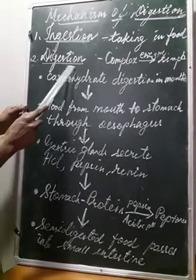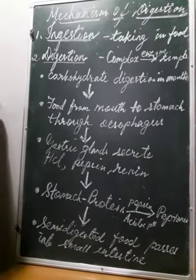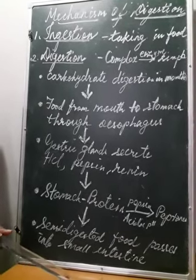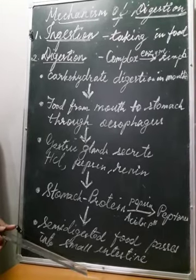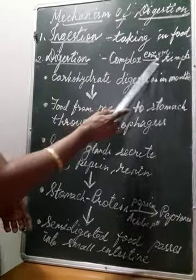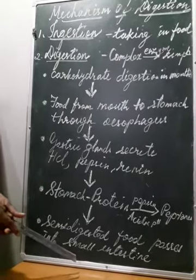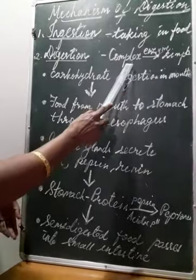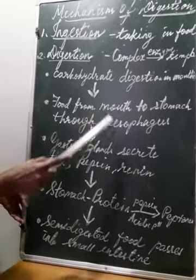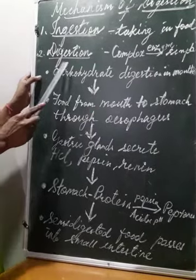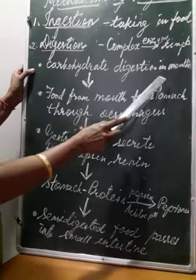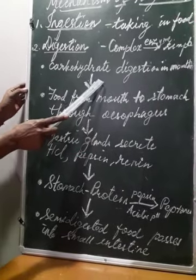The next process is digestion. What is digestion? It is a process where complex molecules are converted into simpler form by the biological catalyst known as enzymes. So complex food is converted into simple form by enzymes. The first step in digestion: carbohydrates are digested in the mouth by salivary amylase.